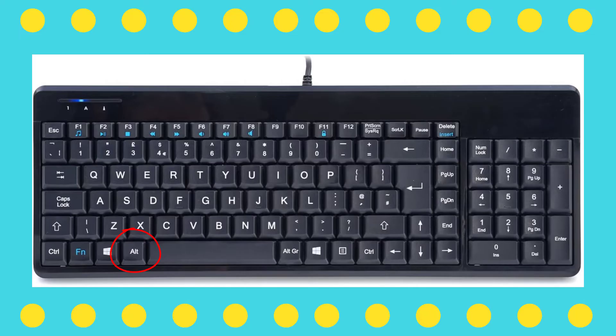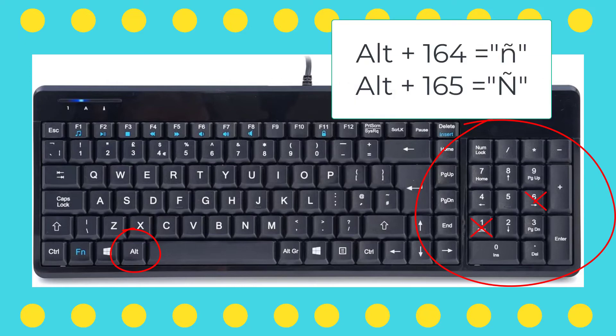The trick is this: hold down the Alt key on your keyboard, and use the numpad — if you haven't got a numpad it's not going to work. Holding Alt, press 164 for a lowercase Eñe, and Alt 165 for an uppercase Eñe. There you go — de nada, adios!